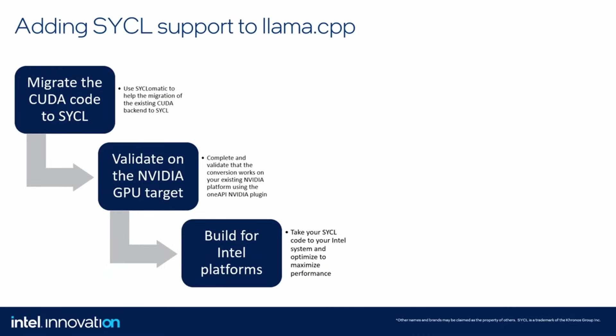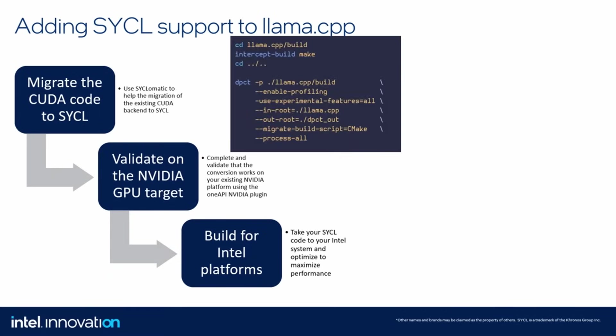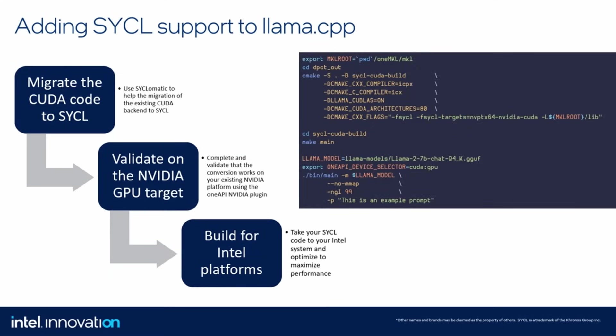So how did we add SYCL support to LLM.cpp? We opted to use SYCLomatic to assist on our migration path from existing CUDA support. First, we build LLM.cpp as usual, except we add the intercept-build command before our make command. The intercept-build command intercepts the build commands and creates a metadata file that can then be used by the dpct tool from SYCLomatic to help migrate vendor-specific CUDA code to the SYCL standard equivalent. Once the code is migrated, we build it for SYCL and NVIDIA GPUs using the Codeplay plugins, using the right flags to set NVIDIA as the DPC++ compilation target. We then run it using the normal LLM.cpp parameters, selecting the CUDA GPU to ensure the device selected by the SYCL runtime is the NVIDIA GPU on the system.